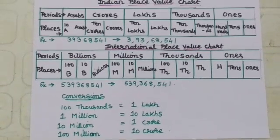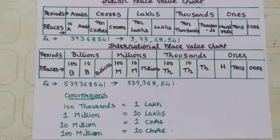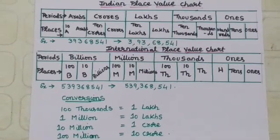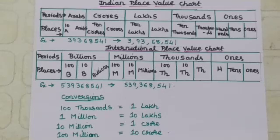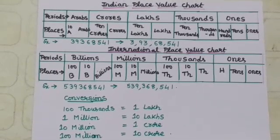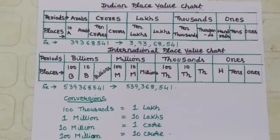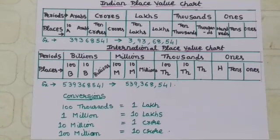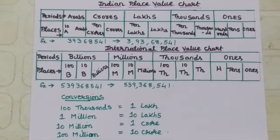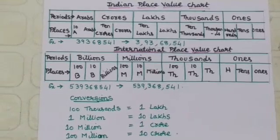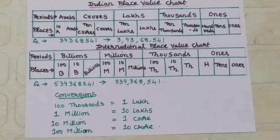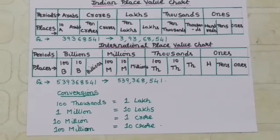Suppose the numeral is 3, 9, 3, 6, 8, 5, 4, 1. We place commas to show the periods. That is, we read the numeral as 3, 93, 68, 541.